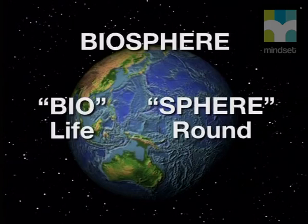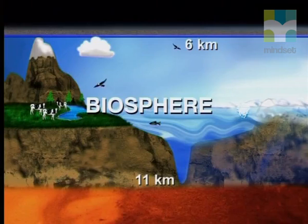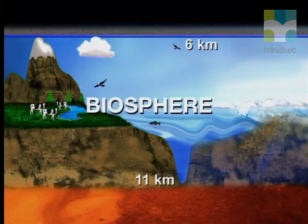The biosphere forms a ring around the Earth. It starts at the bottom of the deepest sea trench, 11 kilometers below the surface of the water, and it reaches up to the skies, about 6 kilometers above the surface of the land. The biosphere exists when three different parts of the Earth exist together to support life.